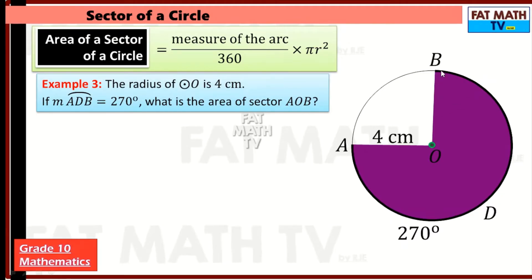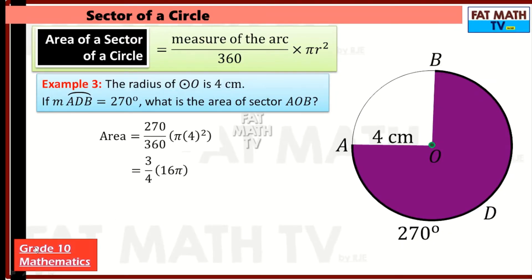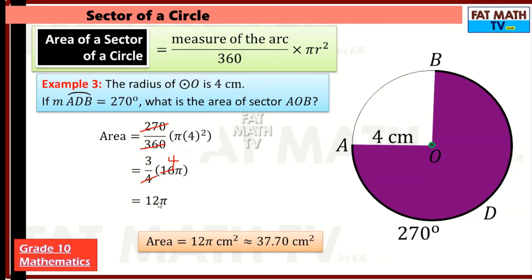Example three: the radius of circle O is 4 centimeters, and the measure of major arc ADB is 270 degrees. What is the area of sector AOB — the shaded sector shown? So 270 over 360 times pi r squared, with r equal to 4. Dividing numerator and denominator by 90 gives 3 over 4. Then 4 squared is 16; canceling gives 4. So 3 times 4pi equals 12pi square centimeters, or approximately 37.70 square centimeters.